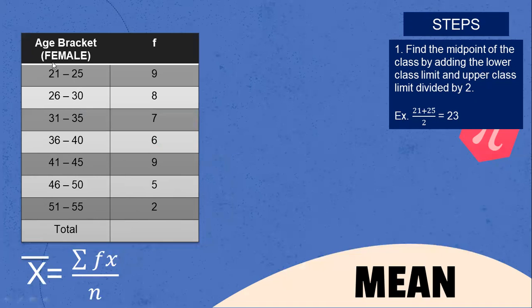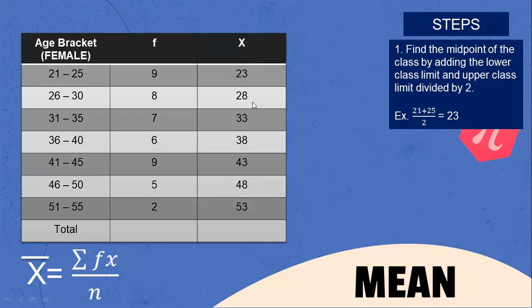For each class, we add the lower class limit and the upper class limit divided by 2. So 21 plus 25 is 46 divided by 2, that is 23. 26 plus 30 is 56 divided by 2, that is 28. 31 plus 35 divided by 2 is 33. 36 plus 40 is 76 divided by 2, that is 38. 41 plus 45 is 86 divided by 2, that is 43. 46 plus 50 is 96 divided by 2, that is 48. 51 plus 55 is 106 divided by 2, that is 53.